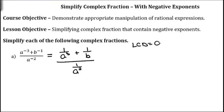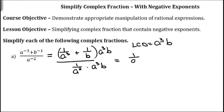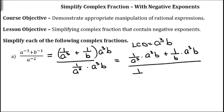I have an a cubed, and the a squared is going to be taken care of by the a cubed, so we don't need anything extra because of that, but we do need a b. So a cubed b is my LCD, and we're going to multiply both the numerator and the denominator by a cubed b. So we'll have 1 over a cubed times a cubed b, plus 1 over b times a cubed b, all of that over 1 over a squared times a cubed b.